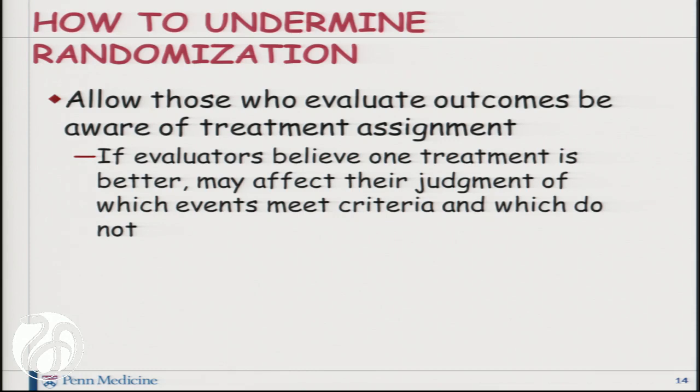You can undermine randomization by allowing those who evaluate outcomes to be aware of the treatment assignment. If somebody reviewing the scans to see whether the tumor has shrunk or gone away knows who's on which treatment, and an evaluator has a belief as to which treatment is better, this can affect judgment. This is why we go to such lengths to try and blind whatever we can, or mask whatever we can, in clinical trials.